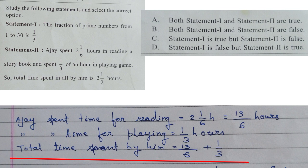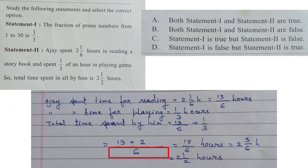So total time spent by him: 13 by 6 plus 1 by 3 equals... Common denominator 6. 6 divided by 3 equals 2. 2 into 1 equals 2. So total time 13 plus 2 equals 15 by 6 hours.